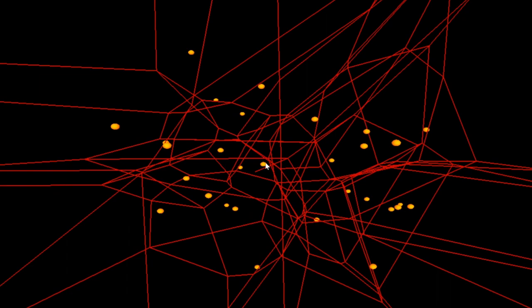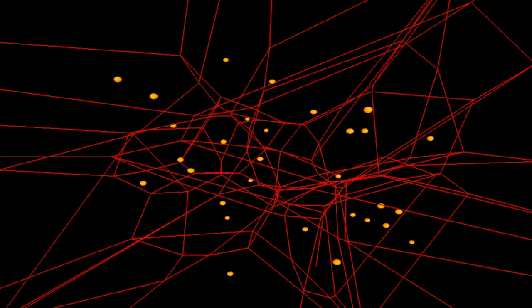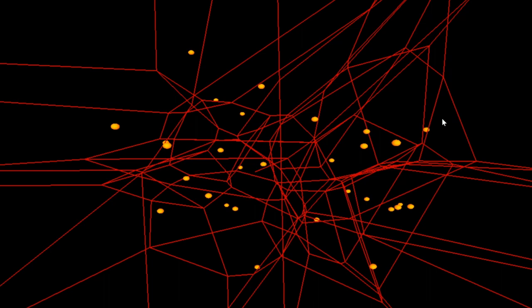You can see here the Voronoi diagram in three dimensions for a set of about 30 points. The Voronoi edges are drawn in red. In 3D, the Voronoi diagram is a 3D cell complex and each cell is a complex polyhedron.